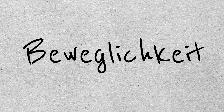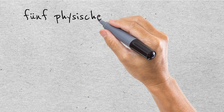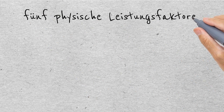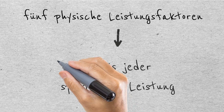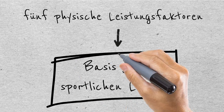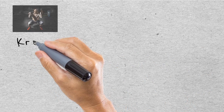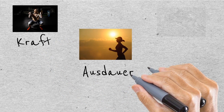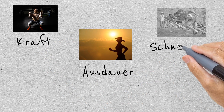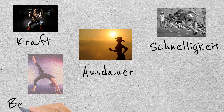Die Beweglichkeit ist einer der fünf physischen Leistungsfaktoren, die die Basis für jede sportliche Leistung bilden: Kraft, Ausdauer, Schnelligkeit, Beweglichkeit und Koordination.